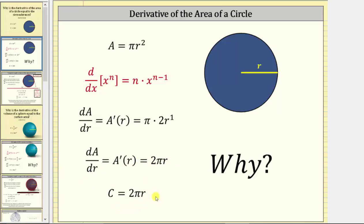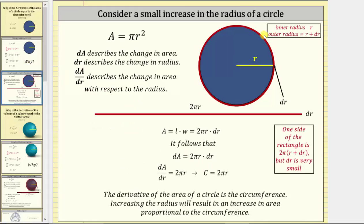So the question is, why is this derivative equal to the circumference? Let's first review some notation. Differential A, or dA, describes the change in the area. Differential r, or dr, describes the change in the radius. And therefore, dA/dr, or A prime of r, describes the change in the area with respect to the radius.